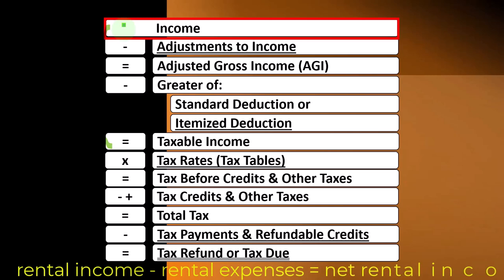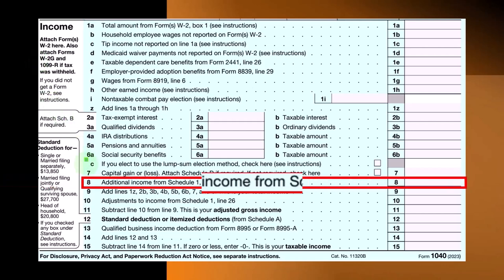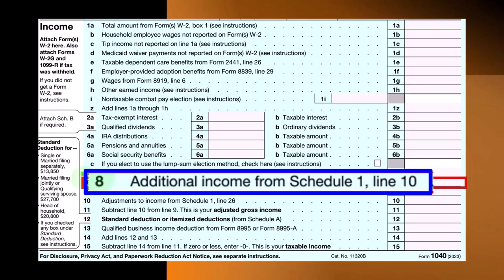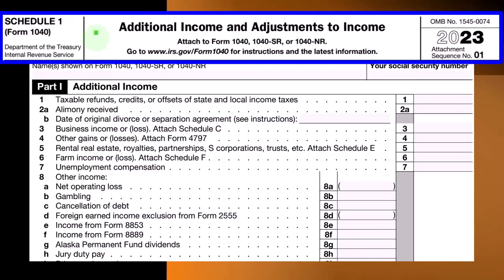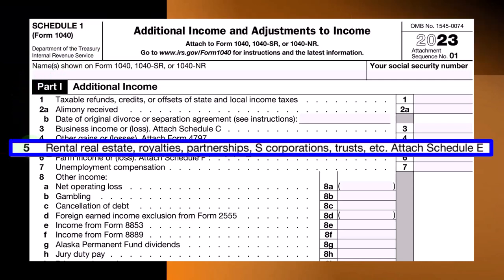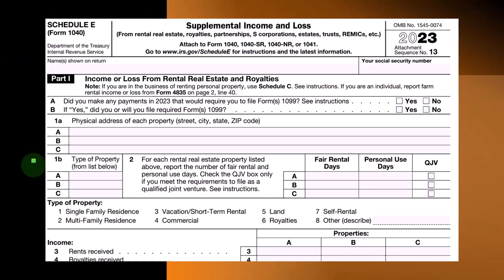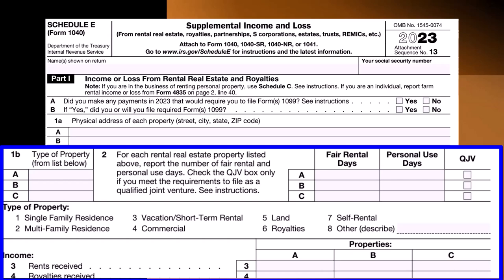Net rental income flows from the Schedule E to line one of the income tax formula on Form 1040. Schedule E ultimately rolls into line eight, Additional Income from Schedule 1. Schedule 1 — Additional Income and Adjustments — part one, additional income, has Schedule E rolling into line five: Rental real estate from Schedule E. The Schedule E is Supplemental Income and Loss from rental real estate, royalties, and so on, having an income statement format. We're now focusing on depreciation.